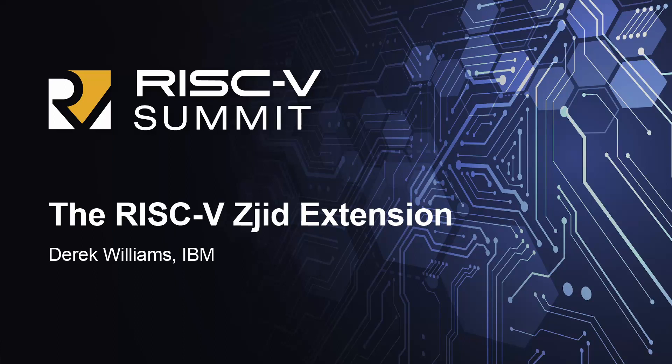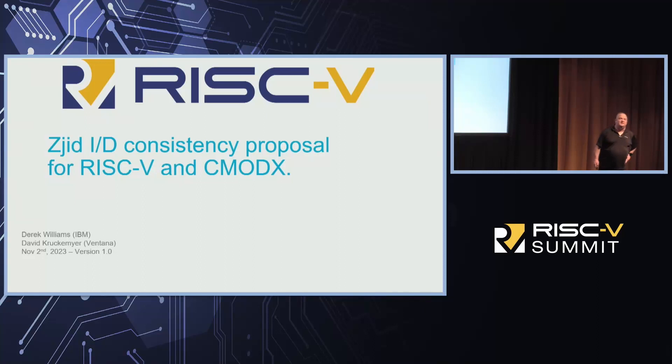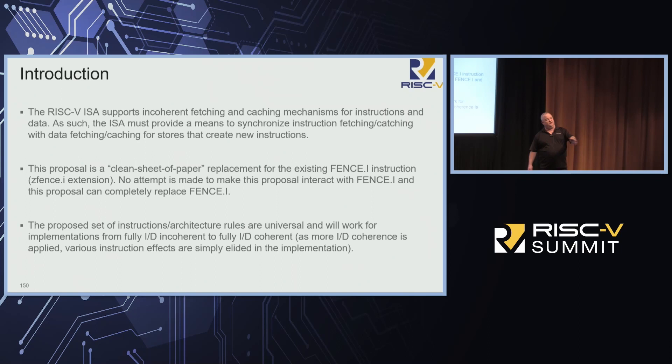This afternoon we can talk about the ZJ ID consistency protocol and concurrent modification and execution of instructions. RISC-V's ISA supports incoherent instruction and data fetching and caching, so we're going to need some way when you create new instructions and data to get the I-fetchers up to date and catch them up. That's what this is about.